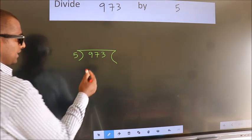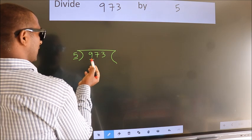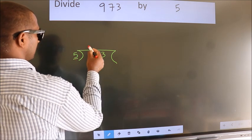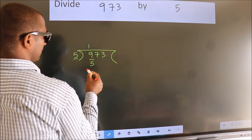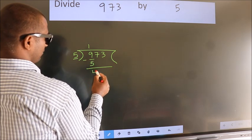Next, here we have 9, here 5. A number close to 9 in 5 table is 5 once 5. Now we should subtract. We get 4.